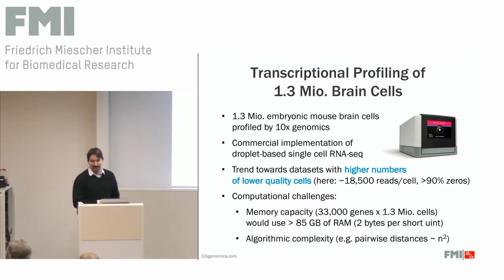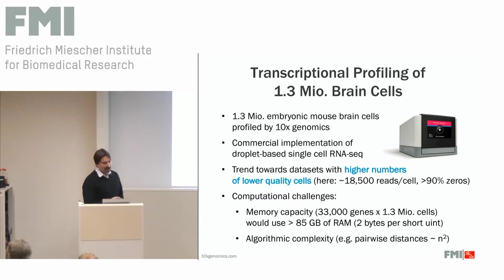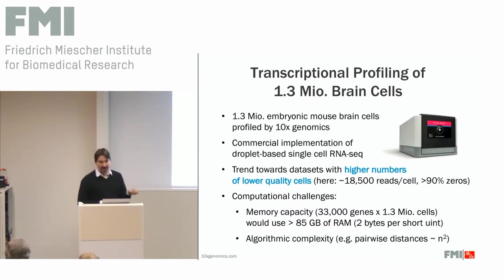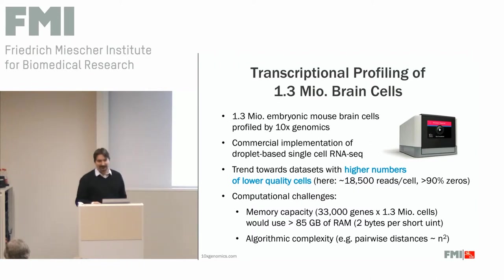People are sequencing more and more samples down to even individual cells. There is one data set produced by a company called 10x Genomics on a relatively simple, not-so-expensive device. The data set consists of the transcriptome profiles for 1.3 million brain cells. It's a microfluidics device that does all the reactions in very small water droplets in an oil emulsion. The data set has about 1.3 million columns and about 30,000 rows — so we're looking at really large matrices here.